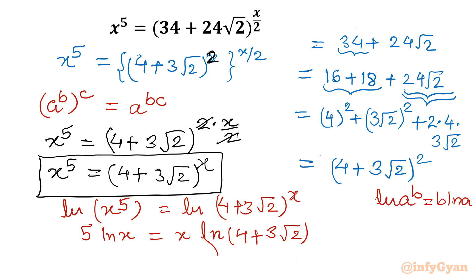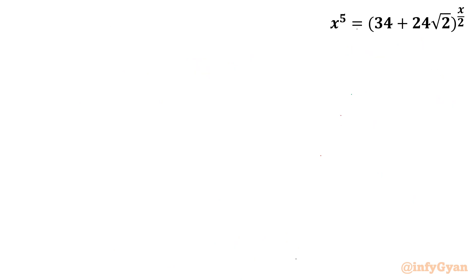So I will write 5 ln x equal to x ln 4 plus 3 root 2. Now I will arrange the terms. ln x over x I will collect. So ln x over x, that would be equal to ln 4 plus 3 root 2 divided by 5. Then I will use exponent property: x is equal to e raised to the power ln x.